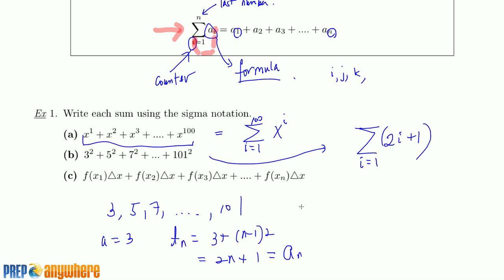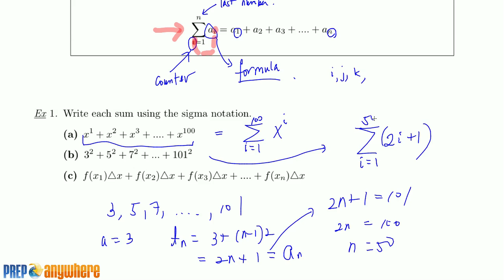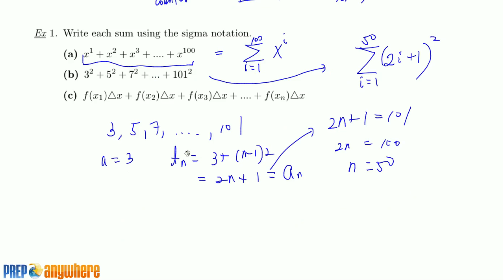To find how high it needs to go, use the general form 2m + 1 and set it equal to the last number, 101. Solving gives n = 50. So you need to go up to 50. There's a square in the expression, but the square doesn't change — only the things that change are expressed with i.